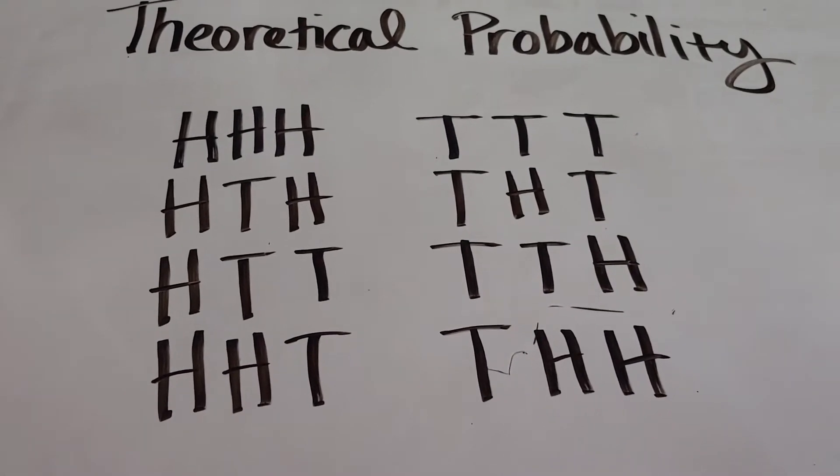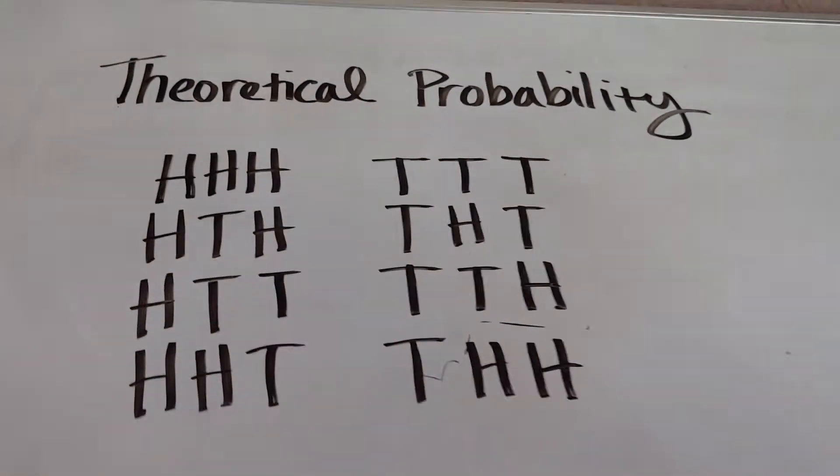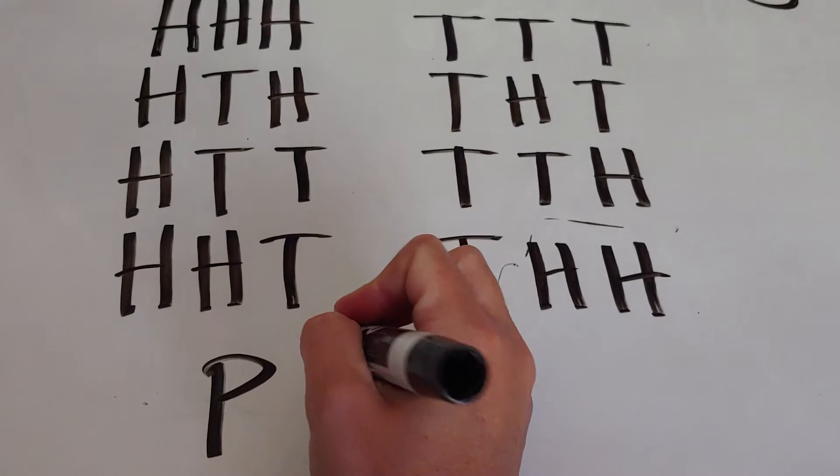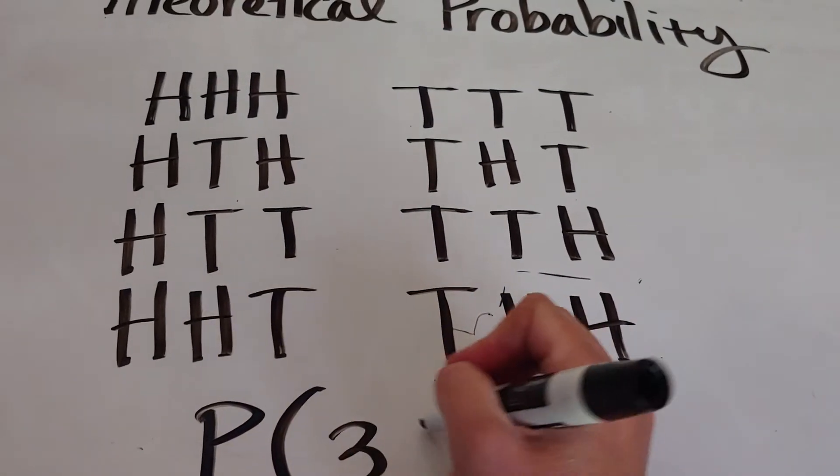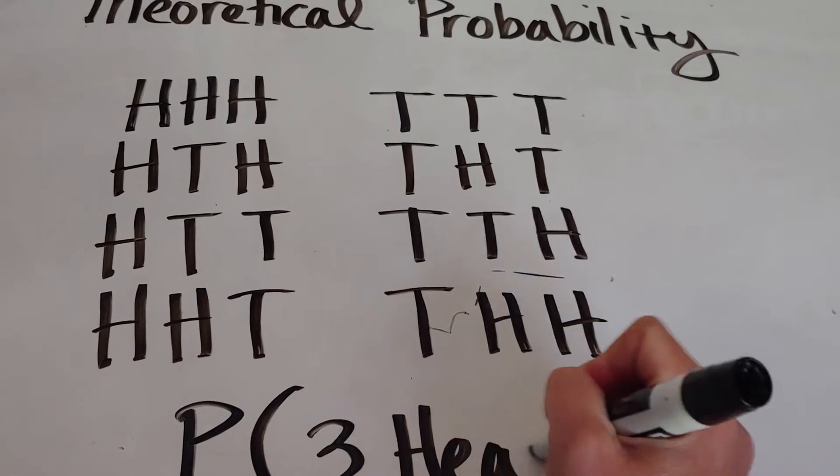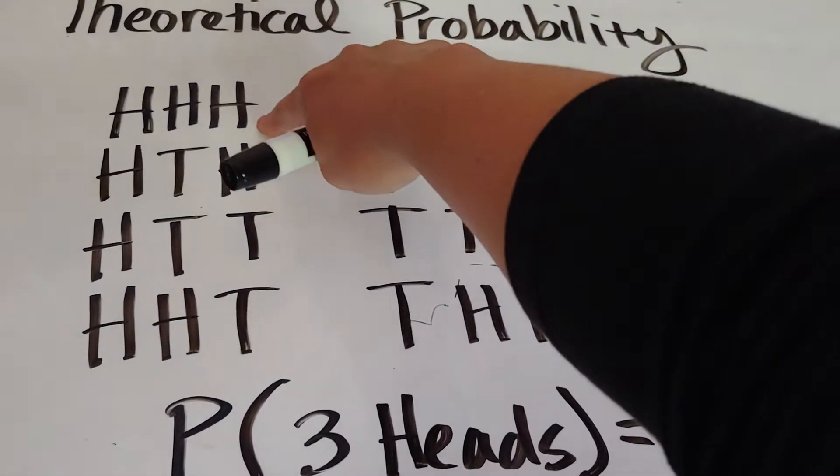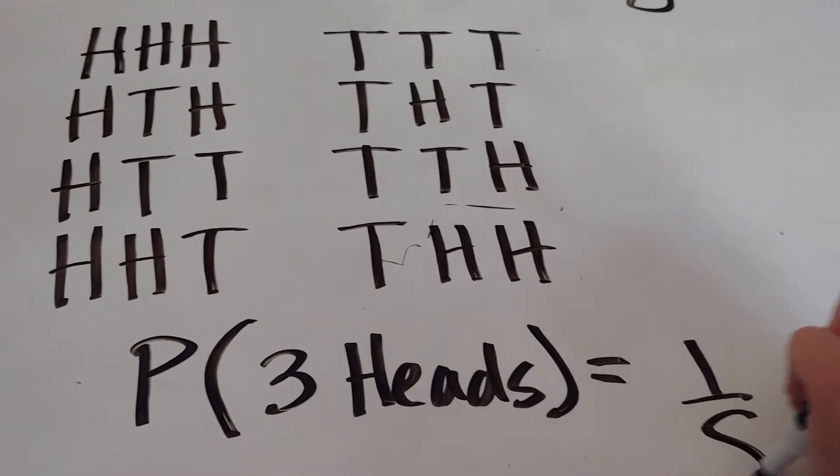Now, the question is, what is the probability? And let's talk again about notation for probability. We use P and parentheses. So what's the probability that we get three heads in a row? Well, there's only one way we can do that: one out of eight.